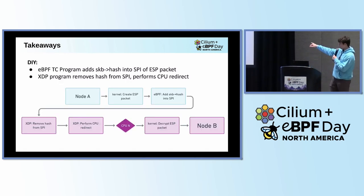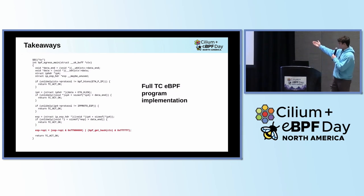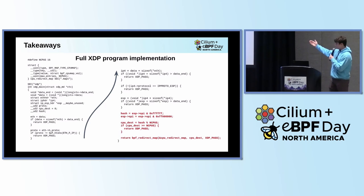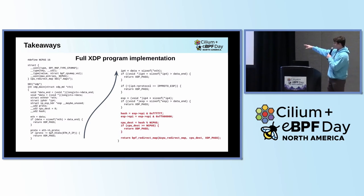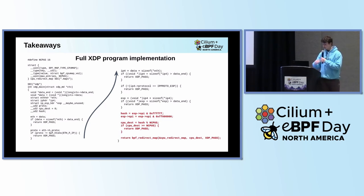If you want to do this outside of Cilium, it's the same architecture: one program runs on egress that adds the hash into the SPI, and then a program on ingress that removes it. Here's the entire egress program — it fits on a slide. The red part is the fun part; the rest is boilerplate to make the eBPF verifier happy. For the ingress side with XDP, same thing — it fits on a slide, two columns but I'm counting it. Again, the red part is the fun part and the rest is boilerplate. This is the implementation I used to test the proof of concept and I was seeing similar throughput improvements, if not better.